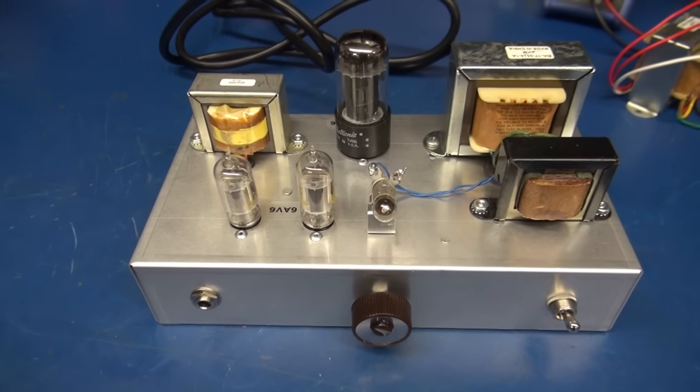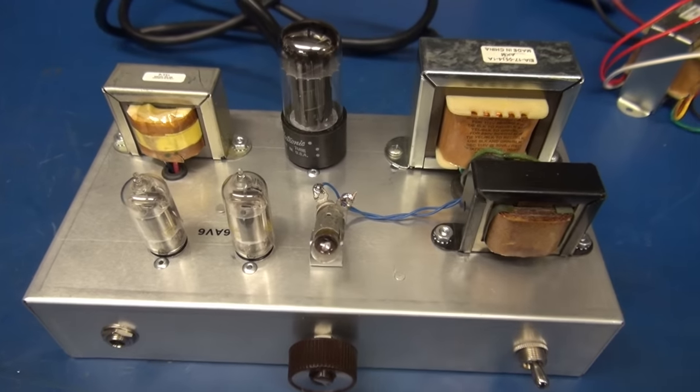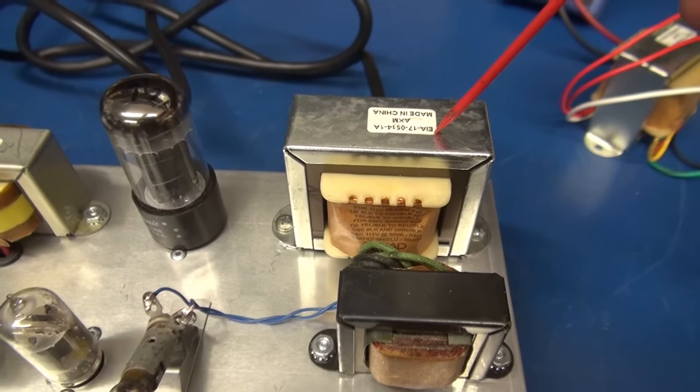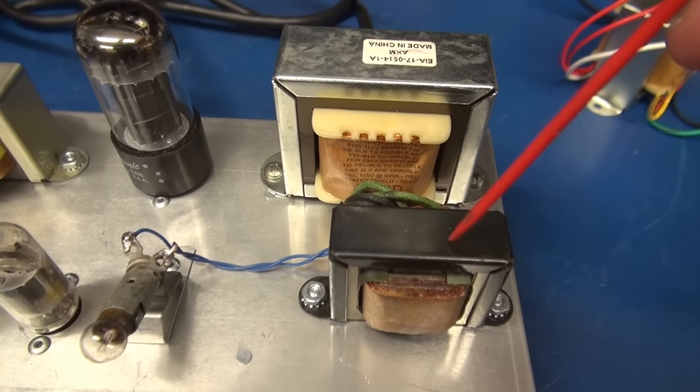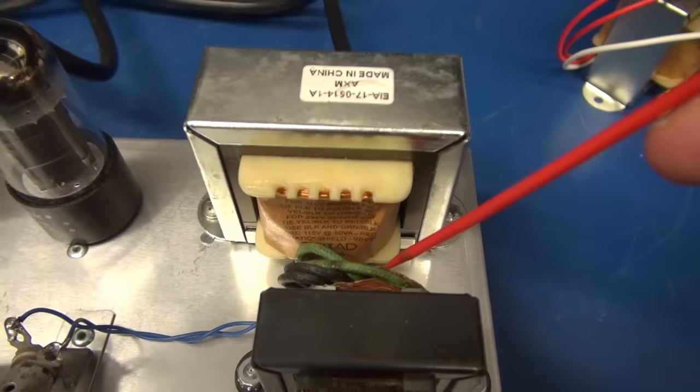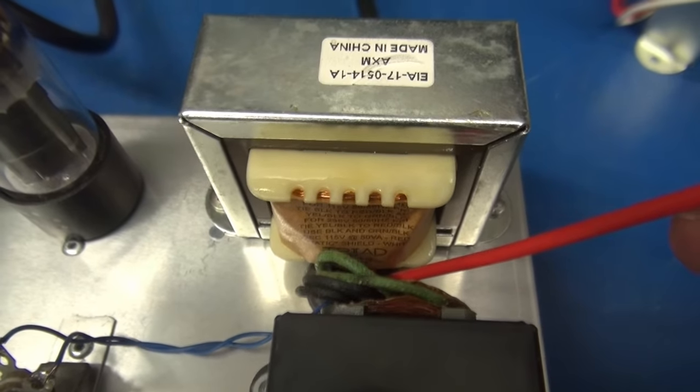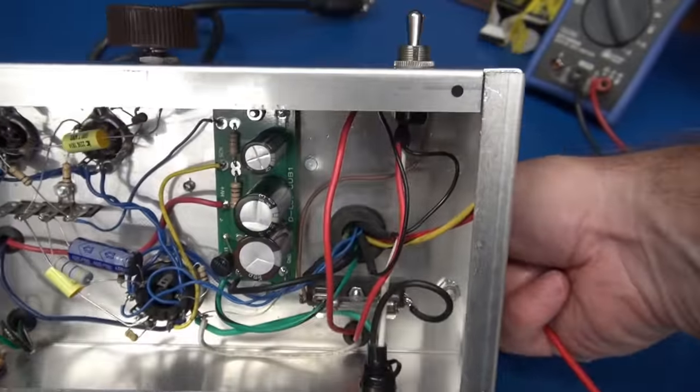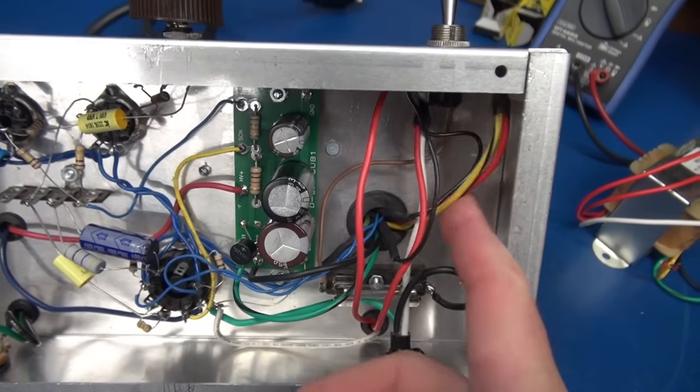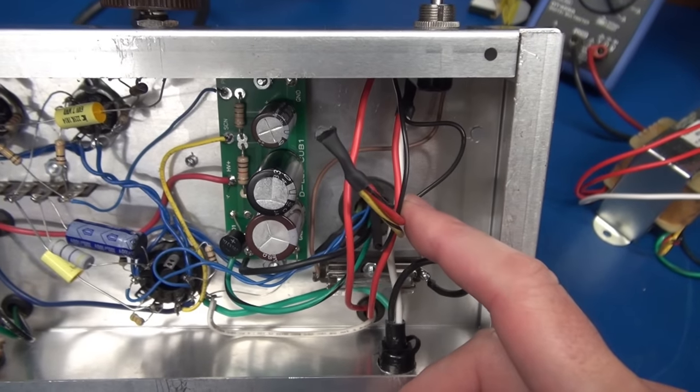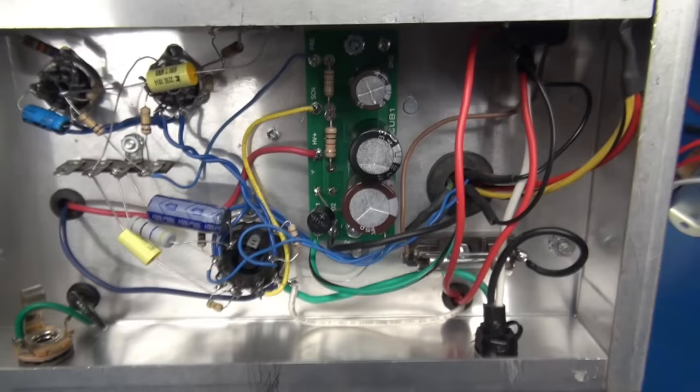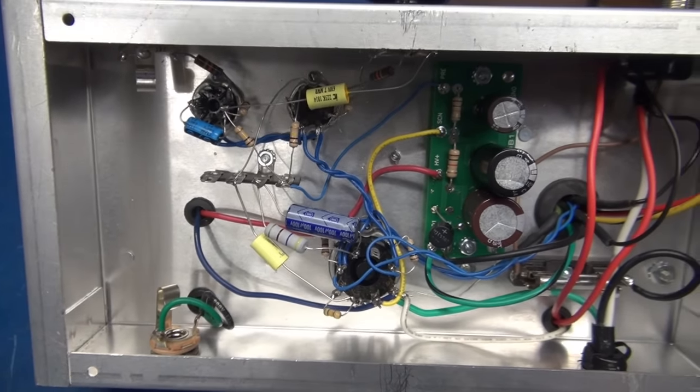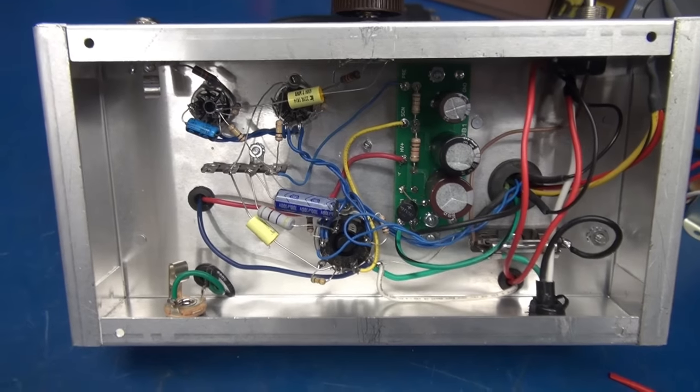So here's a little 6v6 Class A amp that I built for this demonstration. I'm using the Triad N68X and I have a little filament transformer. All the leads dumped down through this rubber grommet to the bottom side of the chassis. Here is my taps connected. And there is my Cub 1 power supply board. The rest of the amp is point-to-point wired. Let's see what it sounds like.